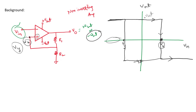In the region between Vy and Vx, the output remains at minus Vsat. This region is called the hysteresis width. The lower boundary of this region is called the lower threshold point, and the voltage at this point is called V_LTP.